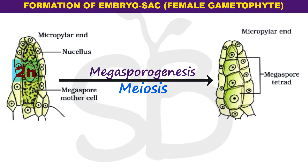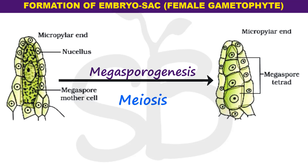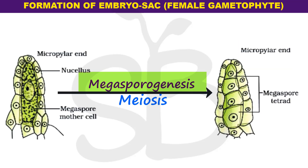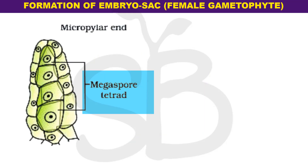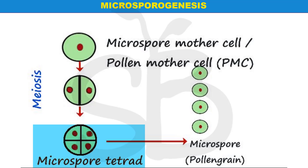The megaspore mother cell undergoes meiosis — that is the reduction division. From the 2N megaspore mother cell, megaspores are formed. Megasporogenesis produces 4 megaspores, forming a megaspore tetrad, similar to the microspore tetrad in male reproduction.